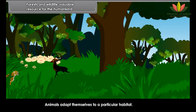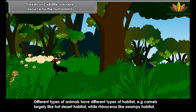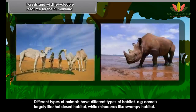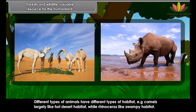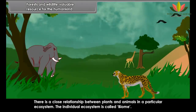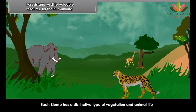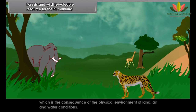Animals adapt themselves to a particular habitat — different types of animals have different types of habitat. For example, camels largely prefer hot desert habitat, while rhinoceros prefer swampy habitat. There is a close relationship between plants and animals in a particular ecosystem. The individual ecosystem is called a biome. Each biome has a distinctive type of vegetation and animal life, which is the consequence of the physical environment of land, air and water conditions.